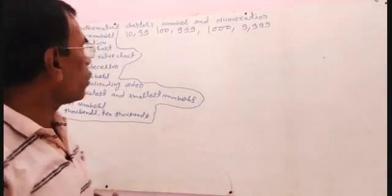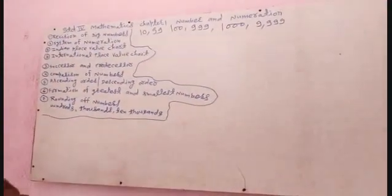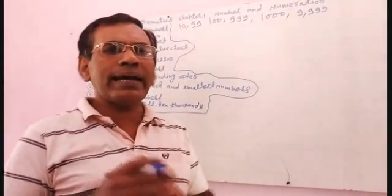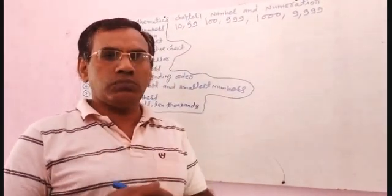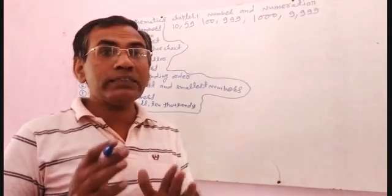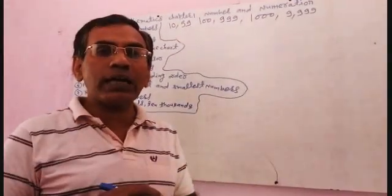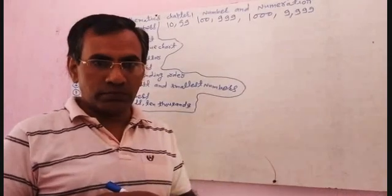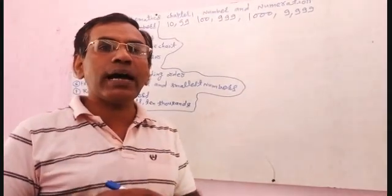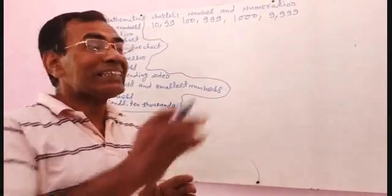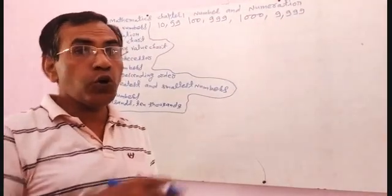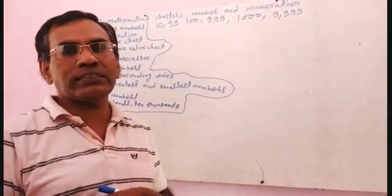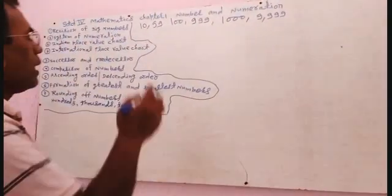Topic Number 2: System of Numeration. System of Numeration means you can arrange numbers according to the Indian place value chart and according to the international place value chart. In the Indian place value chart, first take 3 digits from the right side, then 2 digits, then 2 digits. Suppose you have been given 7, 5, 8, 9, 6, 7.